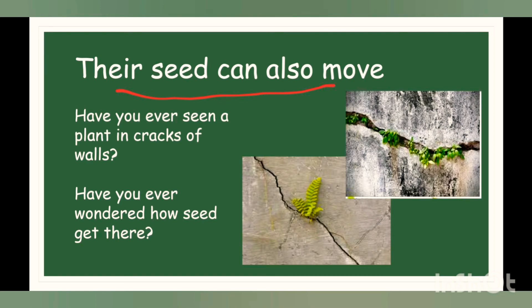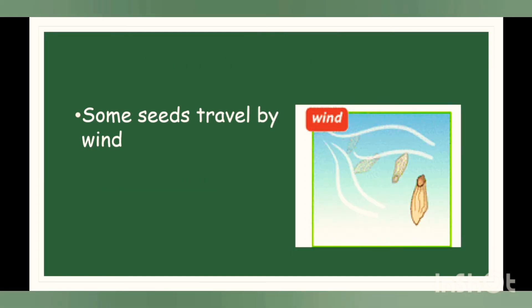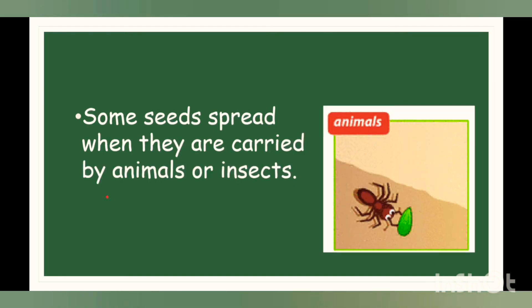Seeds can also move. Have you ever seen a plant growing in the cracks of walls? Have you ever wondered how seeds get there? Seeds move, but they do not travel by vehicles or cars — they have special ways. Some seeds just drop out of a flower onto the ground. Some seeds travel by wind. Some seeds float in water to get onto land. And some seeds spread when they are carried by animals or insects.